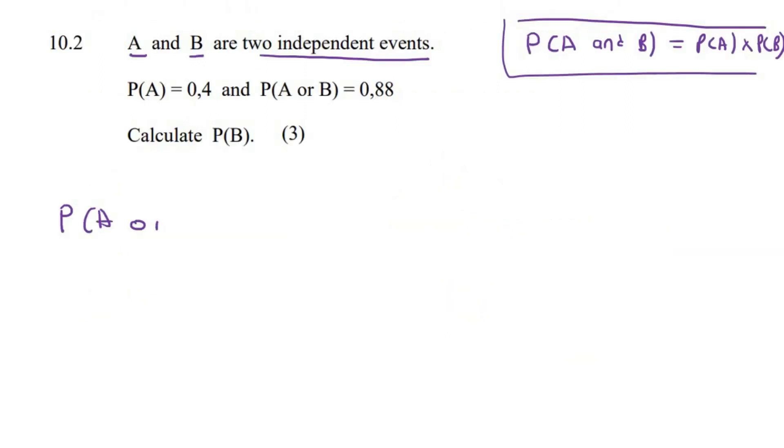So P of A or B is equal to the probability of A plus the probability of B minus the probability of A and B. The next thing is that